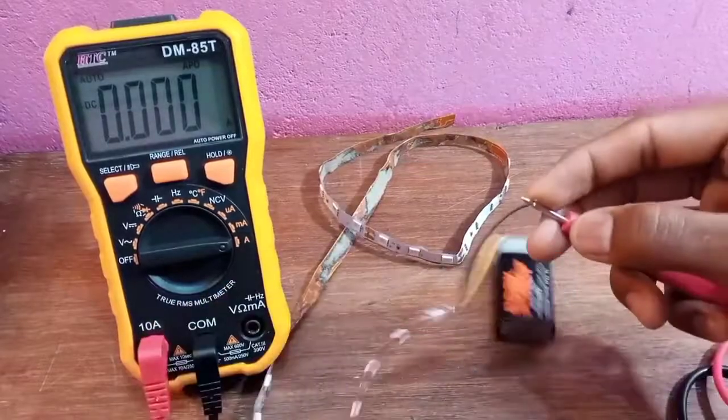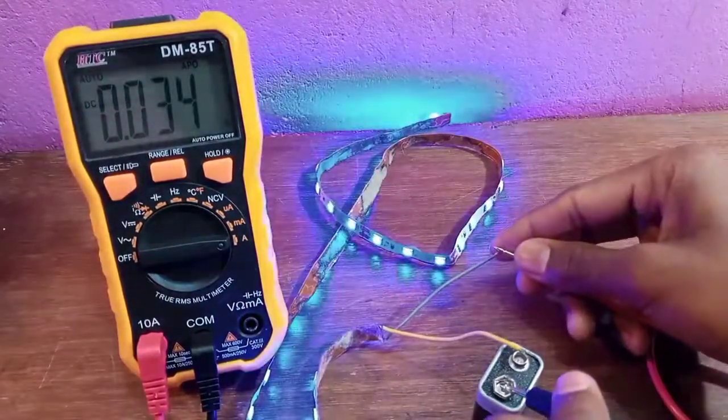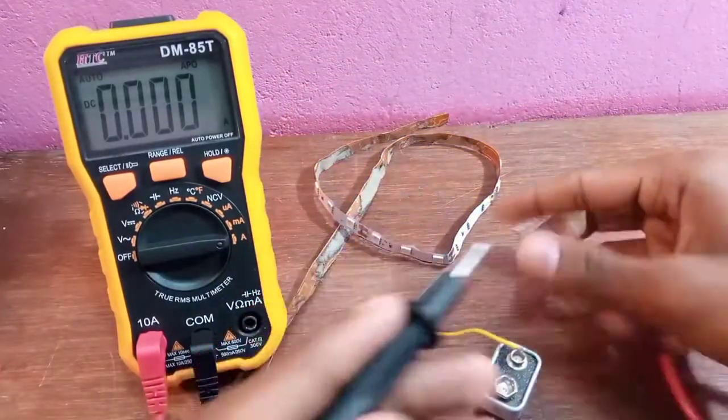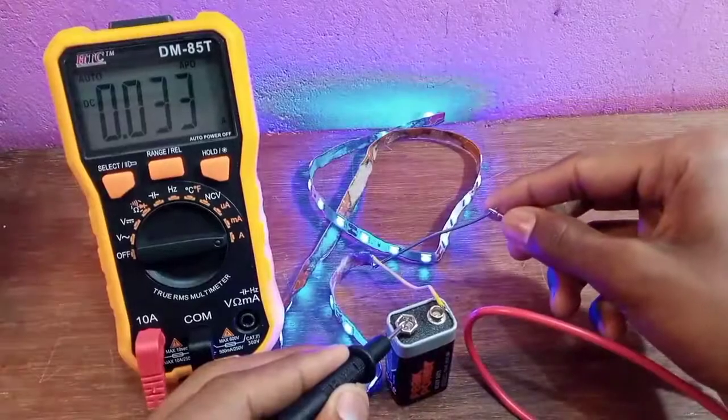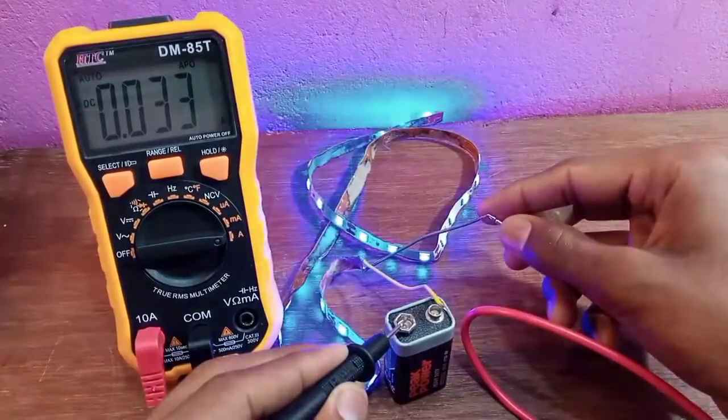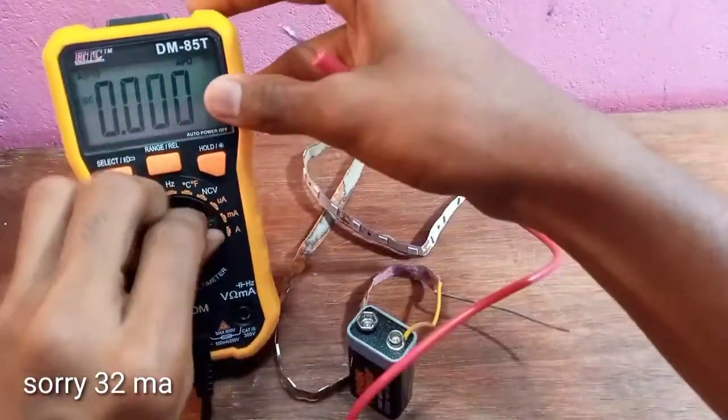Connect negative of multimeter to battery negative and positive of multimeter to LED negative. This is a simple series circuit to measure the LED's current consumption. 32 milliamps for the LED to glow.